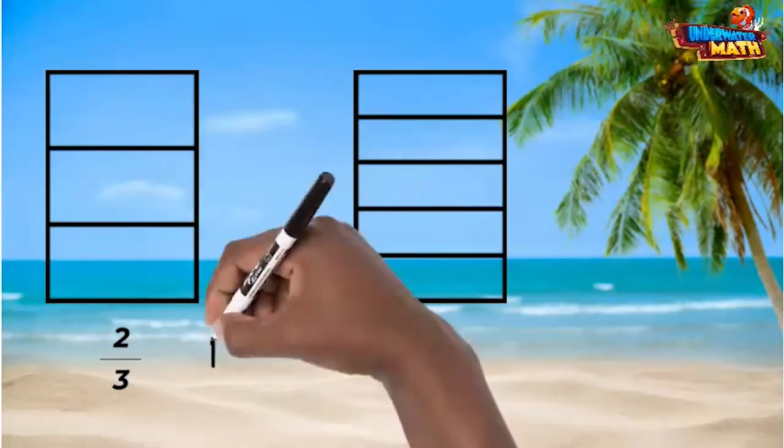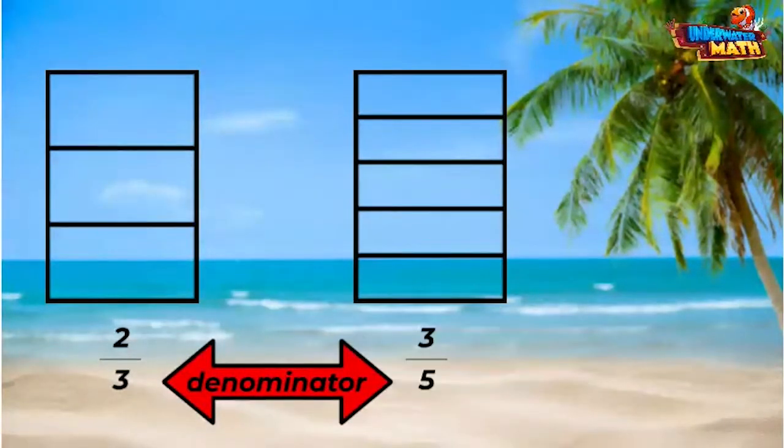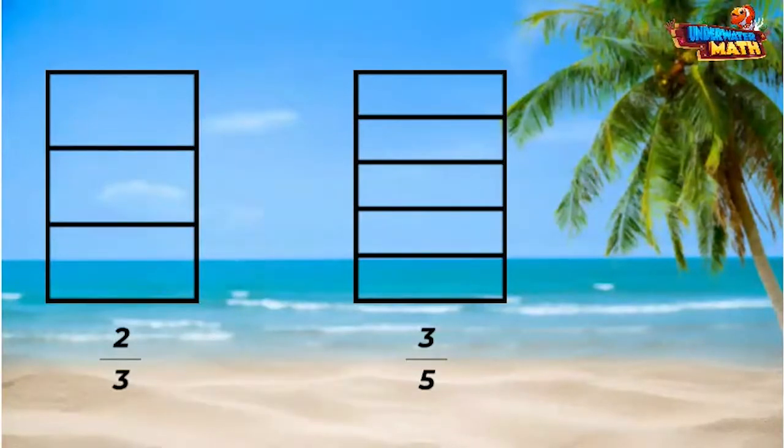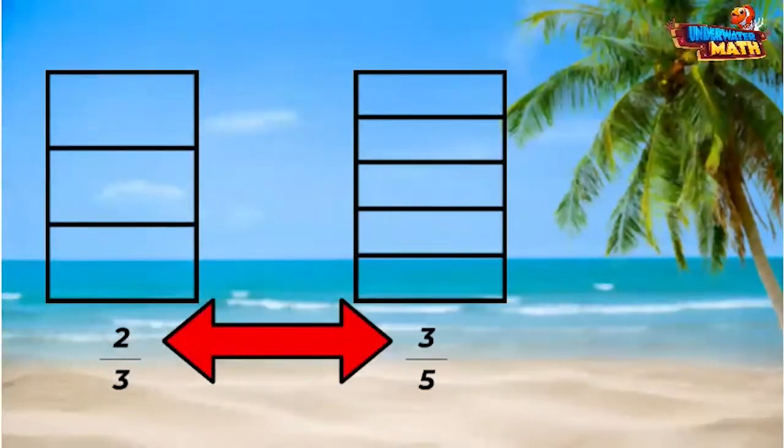Remember, the denominator tells us how many parts we have. Which part of the fraction tells us how many parts to shade? The top number, or the numerator, tells how many parts should be shaded. Exactly! Now we can look at both fractions next to each other.